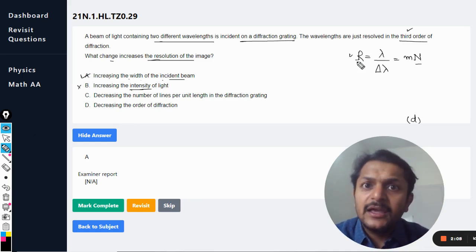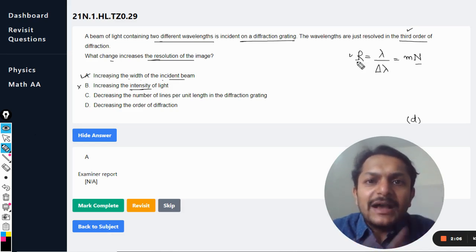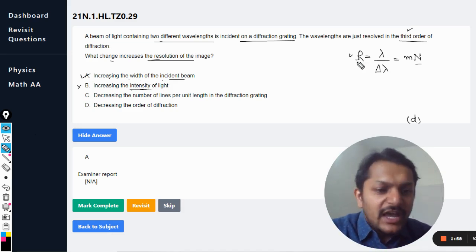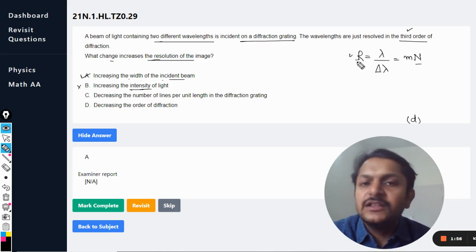And very less amount of energy is able to pass through it which is able to create the pattern. Obviously the resolution is not that very good because the light is not able to reach there. That is why so C is also wrong.